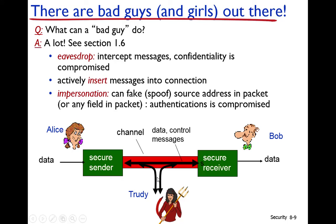What can the attacker do? First is eavesdropping — Trudy intercepts the message Alice sends to Bob and reads the data. This compromises confidentiality because Trudy is reading the message that Alice is sending to Bob alongside the intended recipient.